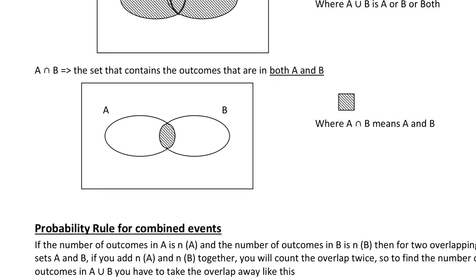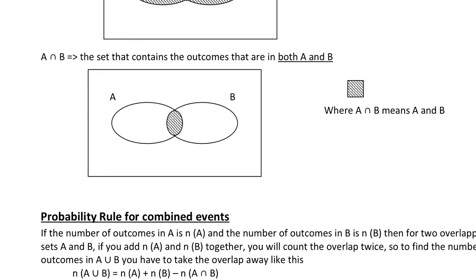If we scroll on down, this next symbol — this is not an N — this means A intersect B, so this is the intersection of A and B. There's a bit in the middle which contains both A and B, so A intersect B means A and B.